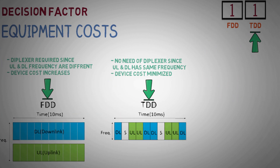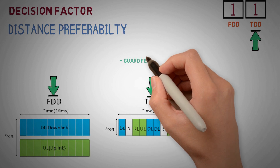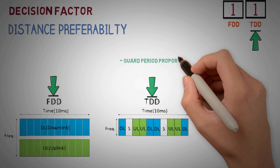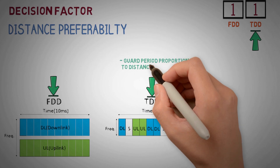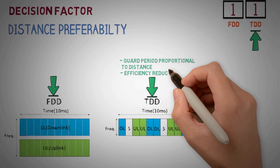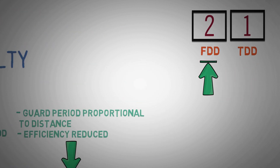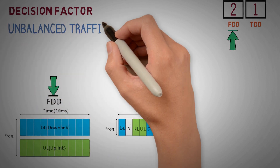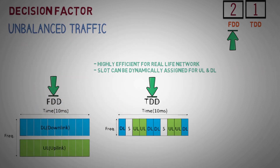Distance preferability — as distance increases, the guard period also increases in TDD because point-to-point signal propagation time increases. The increased guard period significantly affects efficiency, whereas FDD does not have a problem with small or large distances. Unbalanced traffic — in real-life networks, volume consumed in downlink is much higher than in uplink. In TDD it is possible to dynamically adjust capacity by utilizing more time slots for downlink than uplink, whereas in FDD capacity is normally balanced in both directions.